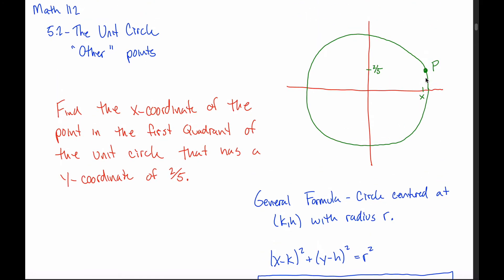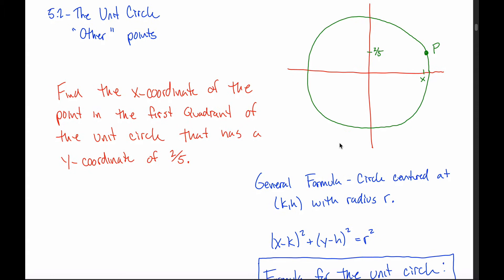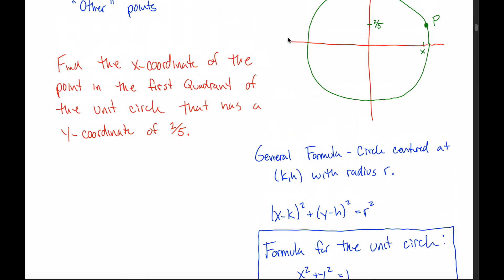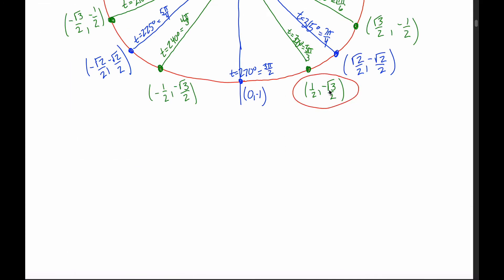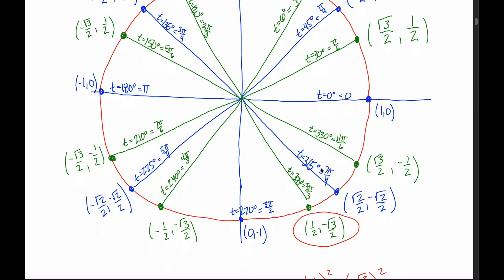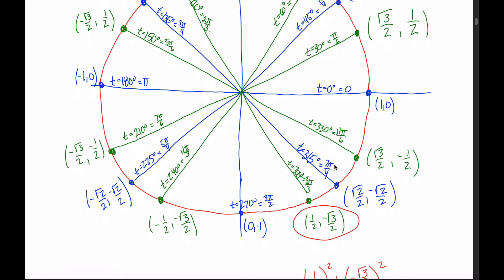The only formula for a circle you'll need in this class is x² + y² = 1. This says that any time you have a point on the unit circle, if you take the x-coordinate and square it, and add the y-coordinate squared, you'll always get 1. For example, taking a point at random with x-coordinate 1/2 and y-coordinate negative √3/2: 1/2 squared is 1/4, and negative √3/2 squared is 3/4. One fourth plus three fourths equals 1. That works for any point on the unit circle, not just the special ones.